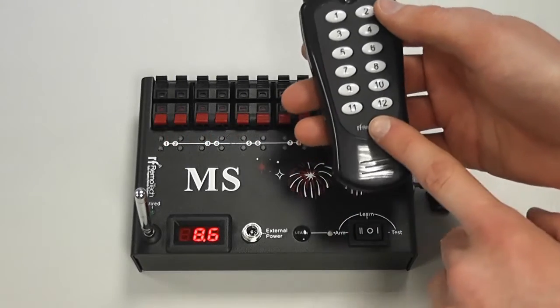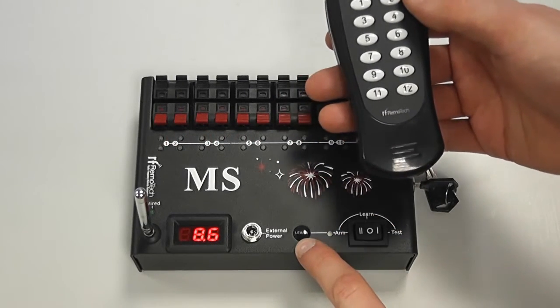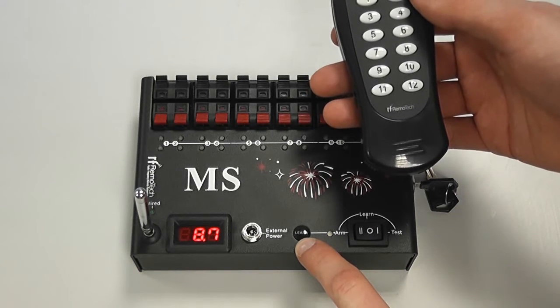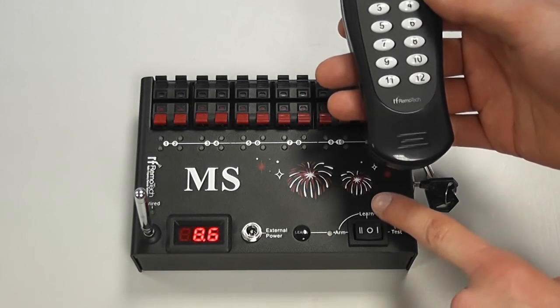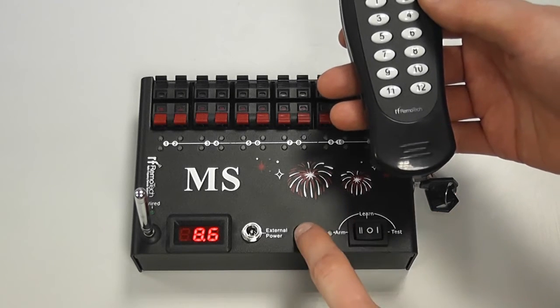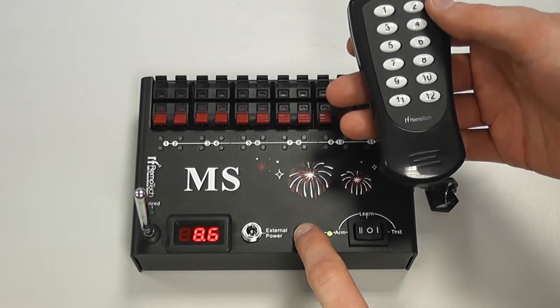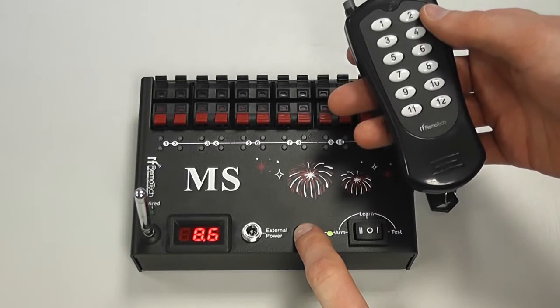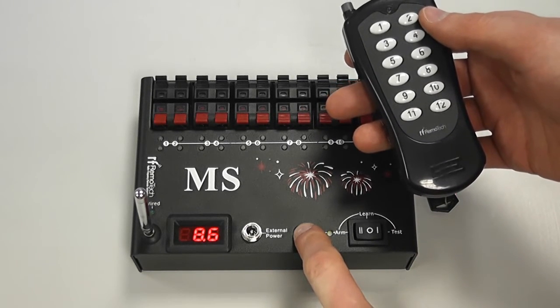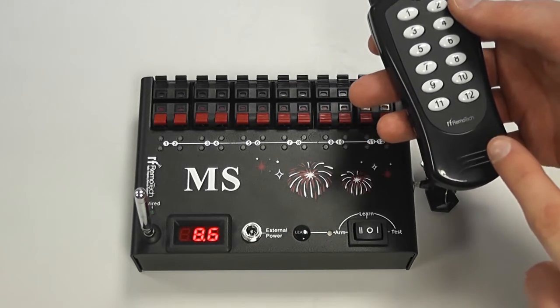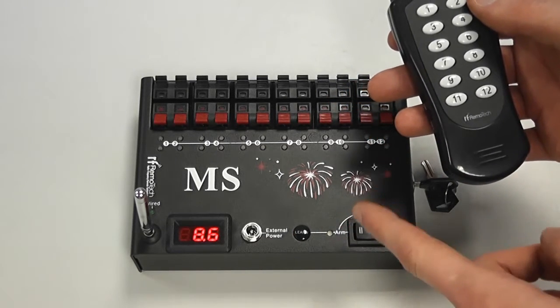To clear a stored remote control from the receiver all you do is press and hold the learn button for around five seconds. You need to make sure that the rocker switch for the receiver is in the middle position which is the learn position. So we'll press and hold the learn button. The learn light will come on and if we keep holding the button it will go off and blink three times.